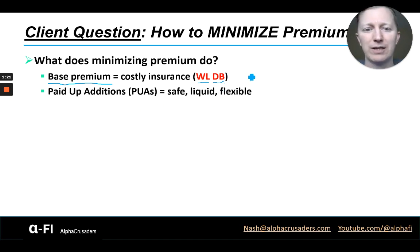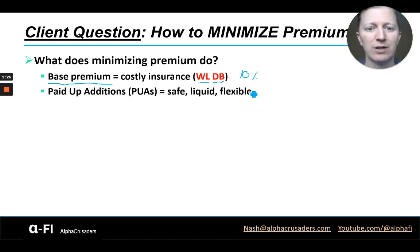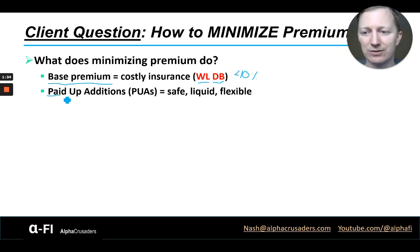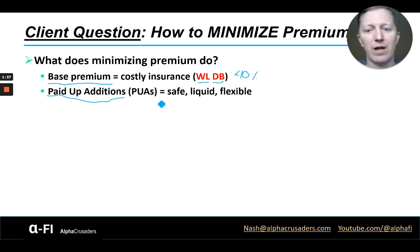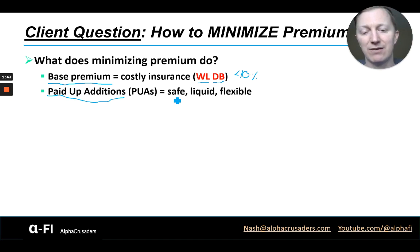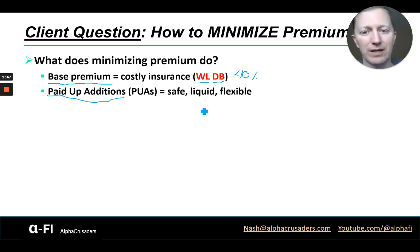We at Alpha Crusaders minimize this as much as possible. We try to put 10% or less of our money into the base premium component of the policy. The rest goes into paid-up additions — it's another type of whole life insurance, but it's a mini contract, and it provides a safe, liquid, flexible area to position the rest of your money.